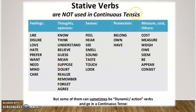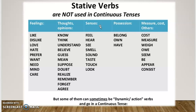Let's look at a table of stative verbs not used in continuous tenses. According to feelings: like, dislike, love, hate, prefer, want, need, mind, care. Thoughts and opinions: know, think, understand, believe, guess, mean, suppose, doubt, realize, remember, forget, agree. Senses: feel, hear, see, smell, sound, taste, touch, look. Possession: belong, have. Measure and others: cost, measure, weigh, seem, be, appear, consist.